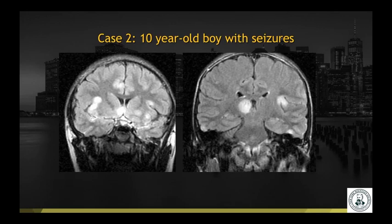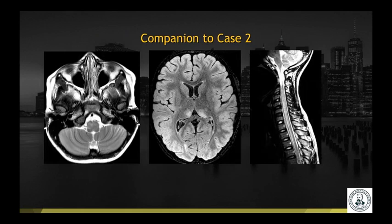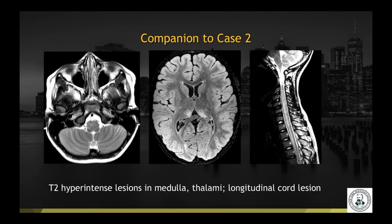Case number two: a 10-year-old boy with seizures. Coronal T2 FLAIR images show T2 hyperintense lesions involving both the white and grey matter as well as the deep grey matter. A companion case with axial T2, axial T2 FLAIR, and sagittal T2 from the cervical spine demonstrates T2 hyperintense lesions in the medulla, bilateral thalami, as well as a longitudinal cord lesion.